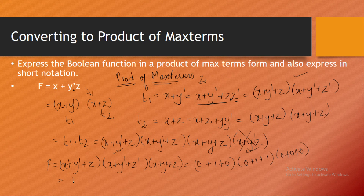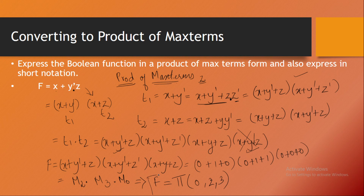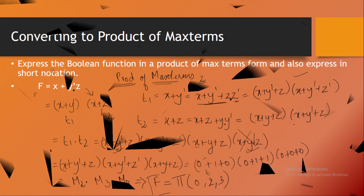So 0+1+0 is nothing else but maxterm M2, 0+1+1 is maxterm M3, and 0+0+0 is maxterm M0. So the same function can be written as product of maxterms: ΠM(0, 2, 3). This gives the final function in short notation. If you like this video, please share and subscribe to the channel — I'll meet you in the next video. Thank you.